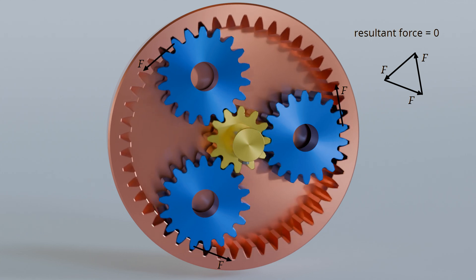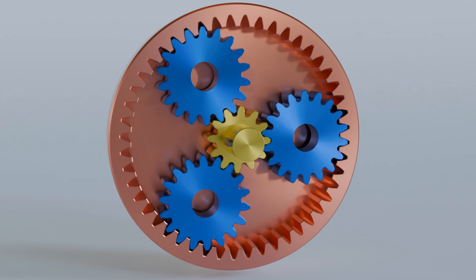At the same time, the circumferential force generated by the torque of the driveshaft is distributed over a total of three gears, reducing the flank forces of each gear. This significantly increases the maximum torque that can be transmitted. In principle, this gearbox is already the preliminary stage of a planetary gearbox.